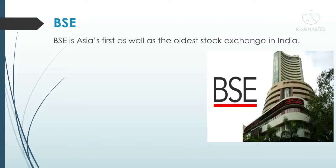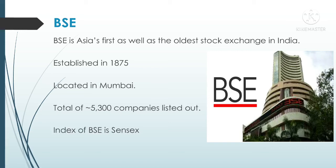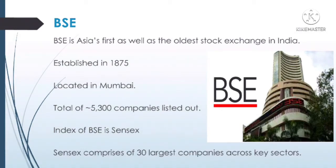Let's see the exchanges one by one. First, BSE — Bombay Stock Exchange. It is Asia's first and also oldest stock exchange in India. It is established in 1875 and its headquarters is located in Mumbai at Dalal Street. There are more than 5300 companies in Bombay Stock Exchange. The index of Bombay Stock Exchange is Sensex. Index means measuring something — here Sensex measures the performance of Bombay Stock Exchange. Out of the 5300 companies, only 30 largest companies are selected and kept in the list of Sensex, chosen from various different sectors. These companies are well established, well capitalized and best performing. In the right side you can see the building of Bombay Stock Exchange located in Mumbai.